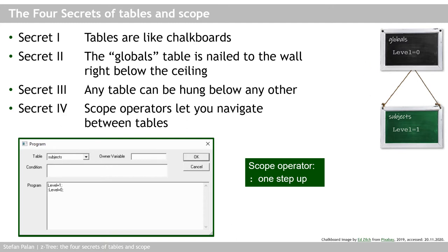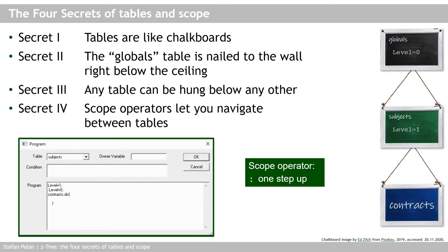Now I can use Ctree code to hang another chalkboard below the current one. Let's try to write a variable into yet another table. For that, I need to tell Ctree that I want a certain piece of code to run not in the subjects table, but in a different table — say the contracts table. Here I use the table function 'do', but any other table function will also open a new table. You recognize table functions by them being prefixed by a table name, and now you also know why: because only this way will Ctree know which chalkboard to hang on your wall. Whatever code I put between the curly brackets will be run in the contracts table.